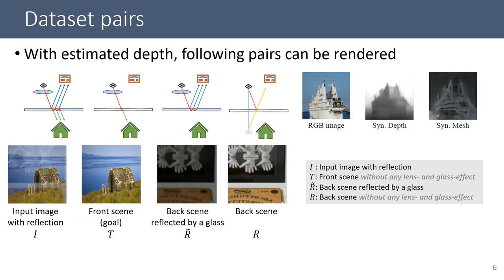For rendering, we pick two scenes from the mesh-processed dataset and assign one for front-scene transmission and the other for back-scene reflection. Assume the glass is placed in between like this. I is the input image with reflection, T is the front-scene transmission, R-tilda is the back-scene reflected by a glass, and R is the back-scene image without any lens and glass effect.